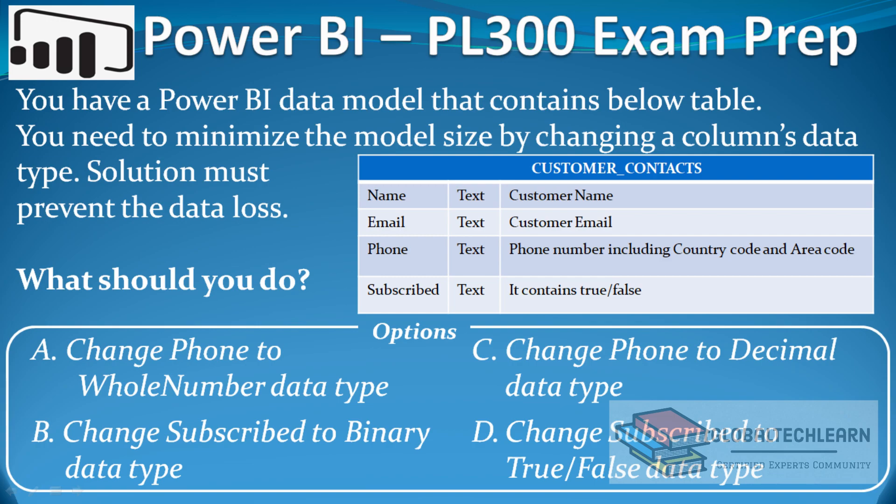The subscribed field contains true or false values and is also set as a text data type. As per the question, we have to change the data type of the given fields to minimize the model size. The options are: change phone to whole number, change phone to decimal, change subscribed to binary, or change subscribed to the true/false data type.